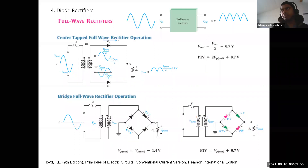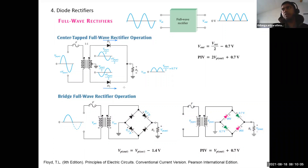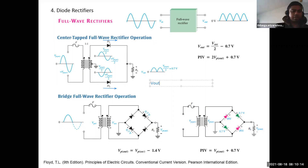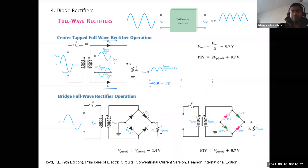There is a diode drop at a given time — we have one drop for the first half, and for the second half we have the second diode drop likewise. So each time we have one diode drop. Because of that, what will be the output voltage? It will be V_out equal to VP secondary.